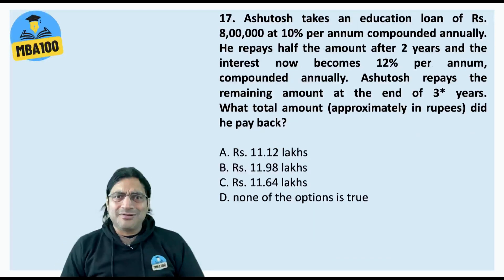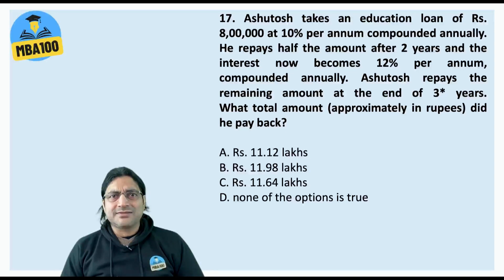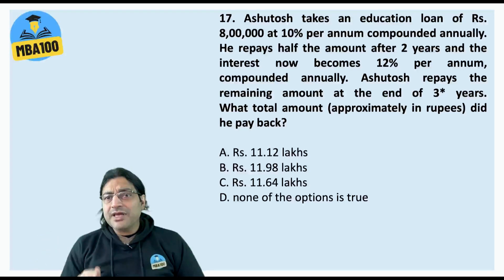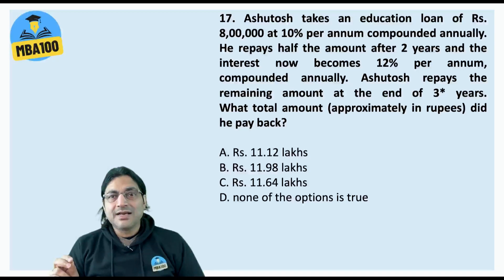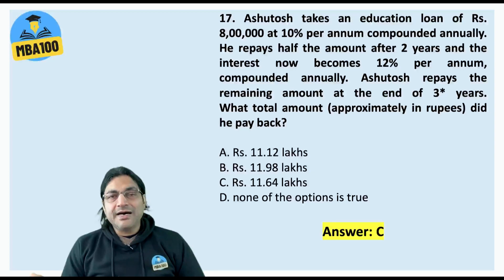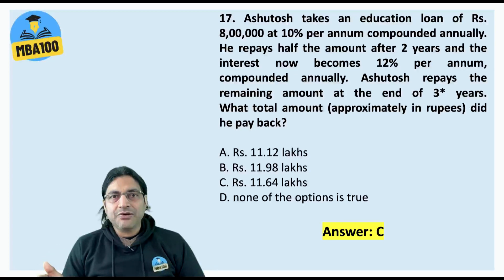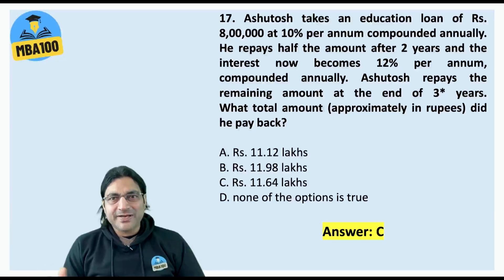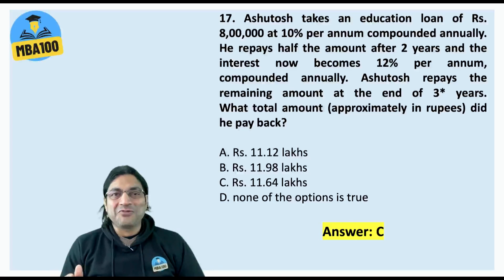Here we have put a star mark for one thing — this was ambiguous at the end of three years: from when? From the start, or after the first two years? In order to get answer C, I need to believe it means three years after the first two years. Please keep that in mind. In the actual question also I am sure it was ambiguous because I also tried to do this question and was stuck because of this. This becomes severe when one of the options is 'none of the options is true.' Don't you think they should be more careful in framing questions?